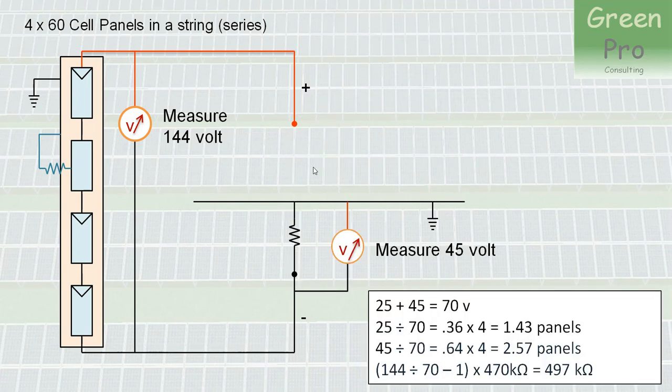Now, how do you interpret these voltages? First of all, you say 25 plus 45 is 70. 70 is a significant proportion of 144 and therefore I have a problem. Secondly, you say 25 divided by 70. Now, remember the 25 you measured on the positive side is 0.36 times 4 panels, because you have 4 panels in series there. And that is 1.43 panels. So you measured it on the positive side. So you start there and you say 1.5, and that's where my problem is in this panel. On the other side, you can say I measured 45 volts. So 45 divided by 70 is 0.64 times the 4 panels is 2.57. So you count 1, 2 and a half, and lo and behold, you end up at the same point. And that makes sense.